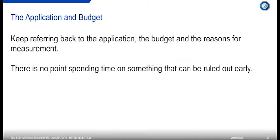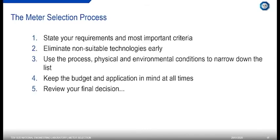I've left this point until last, but it's potentially the most important in many cases: the application and the budget. You have to keep coming back to the application, the budget, and the reasons for measuring. There's no point spending a lot of time specifying something that could be ruled out early. If you have a high measurement uncertainty requirement, there's no point specifying a really expensive high-accuracy device.